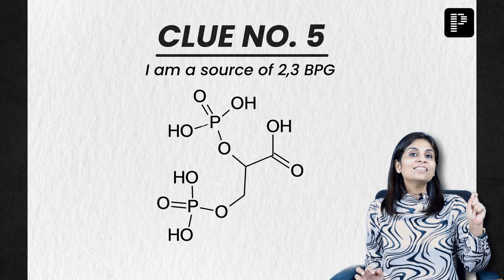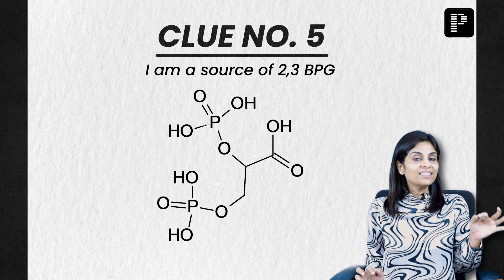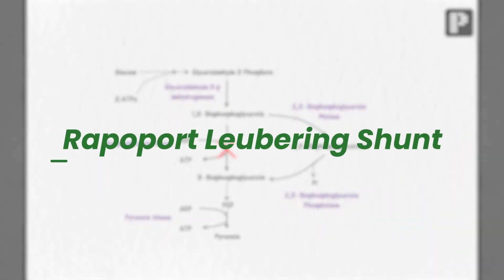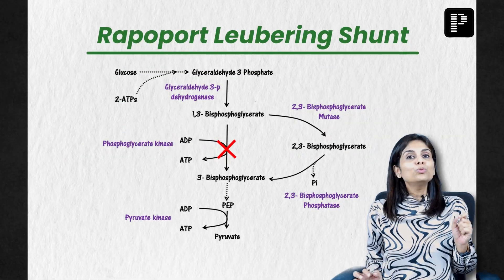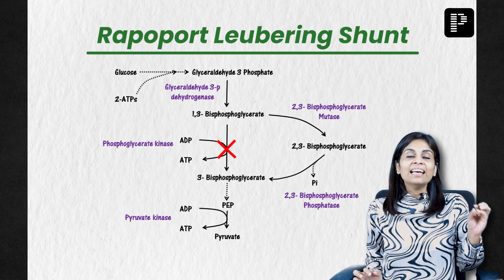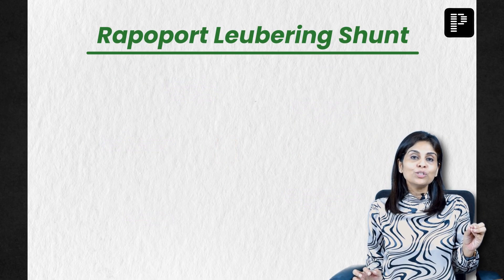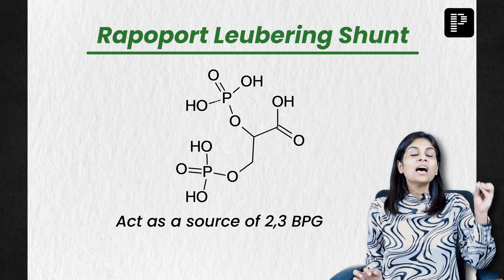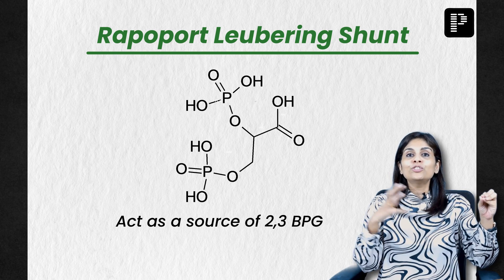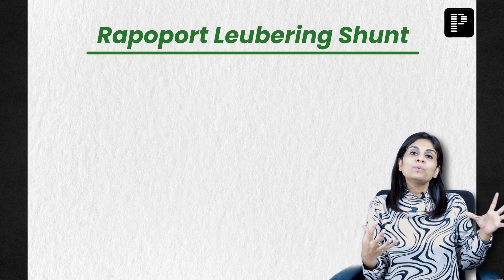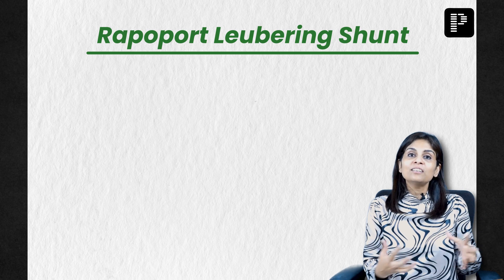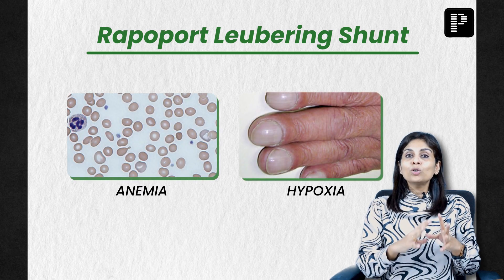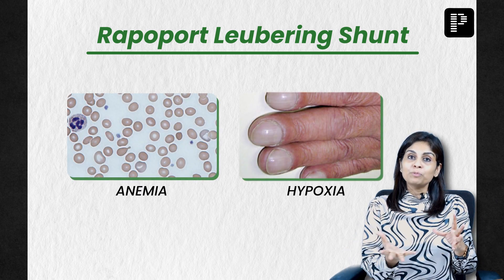The exact answer is the Rapoport-Luebering shunt, also known as the two-three BPG shunt. As the name tells you, it acts as a source of 2,3-BPG, which helps in unloading oxygen to tissues. This pathway gets activated whenever there is hypoxia and anemia.